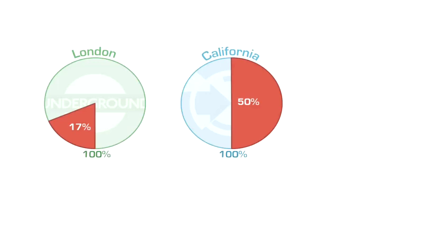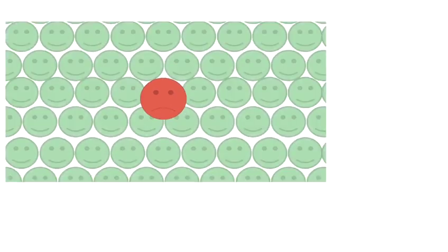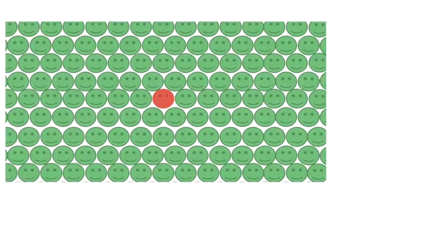Trains crash all the time, about once every week apparently. Now, if I told you that, you might think that trains are a bit dangerous or scary. However, if I told you there were over 5 million train journeys every day, suddenly this puts things into perspective and it doesn't look quite so bad. So that's what percentages do — they allow us to put things into perspective, to measure proportion exactly.